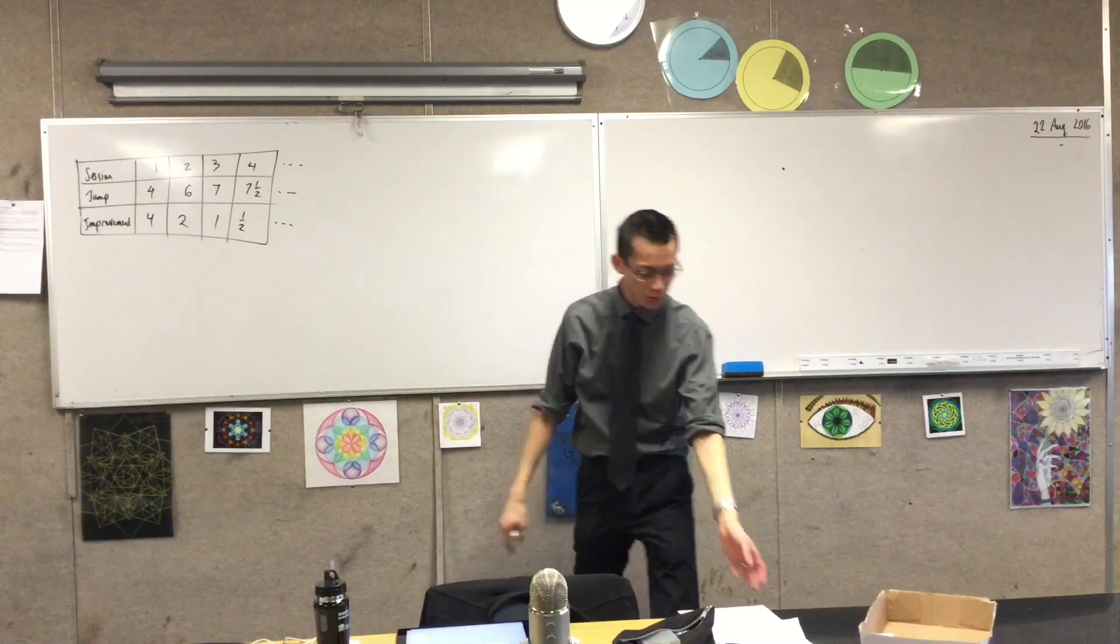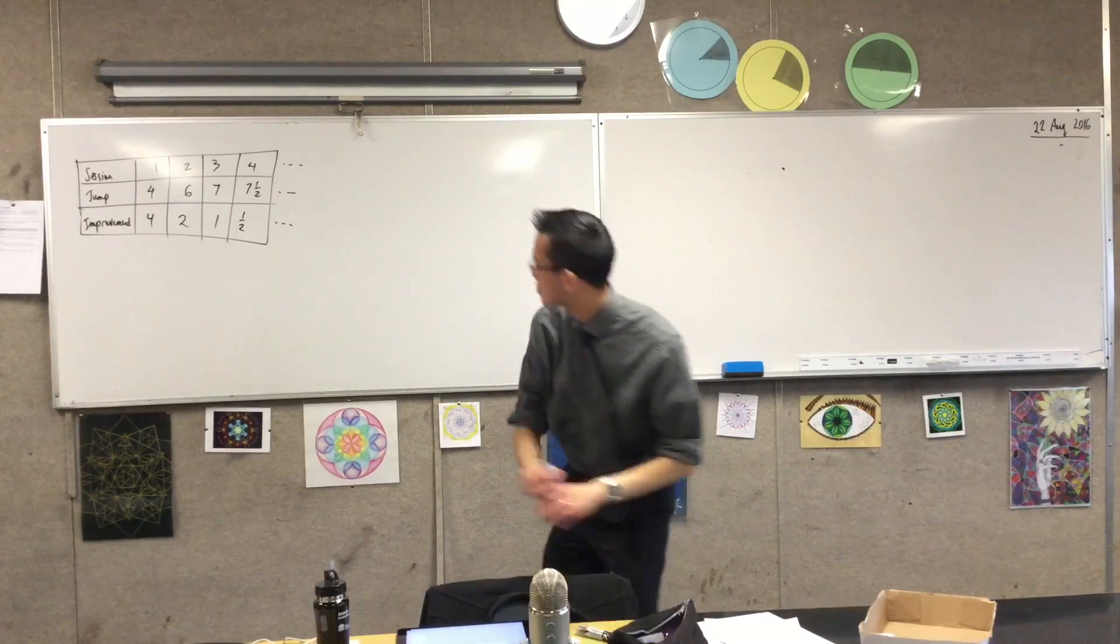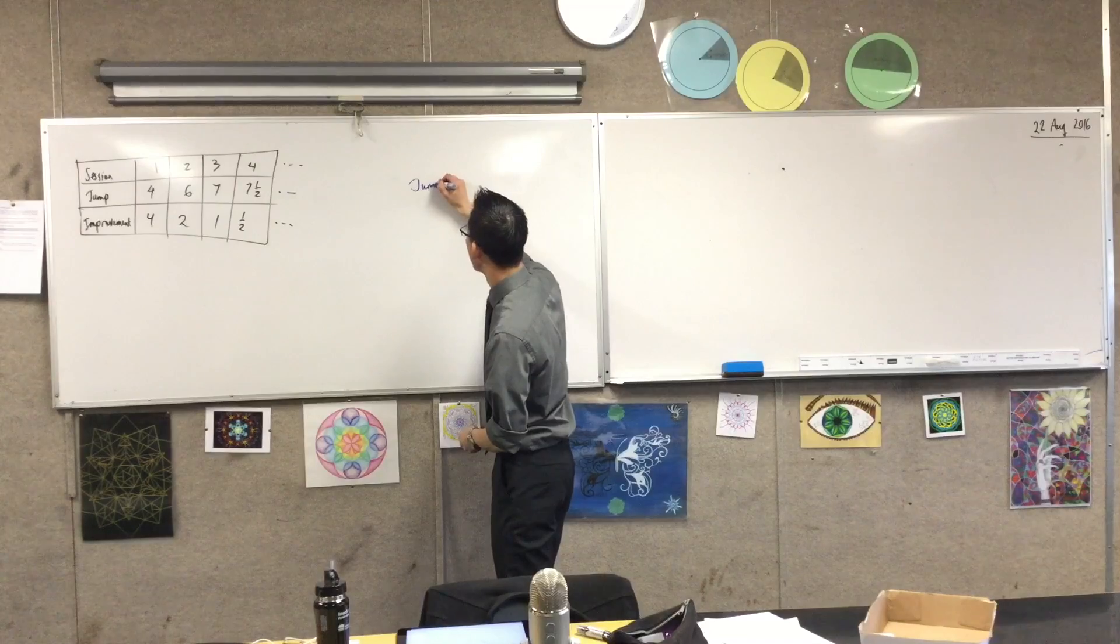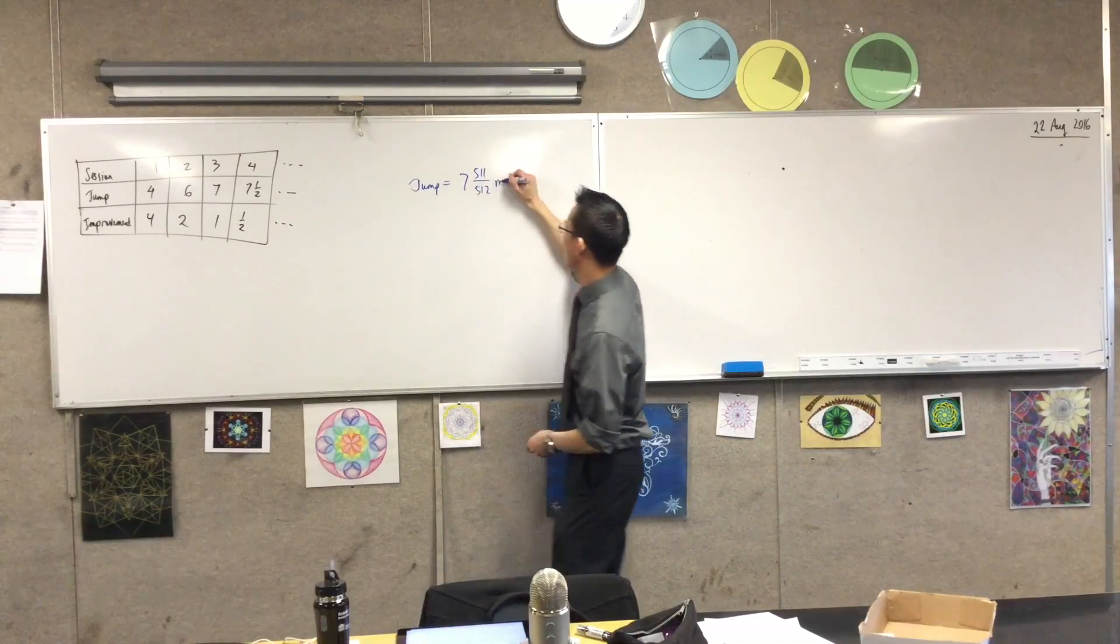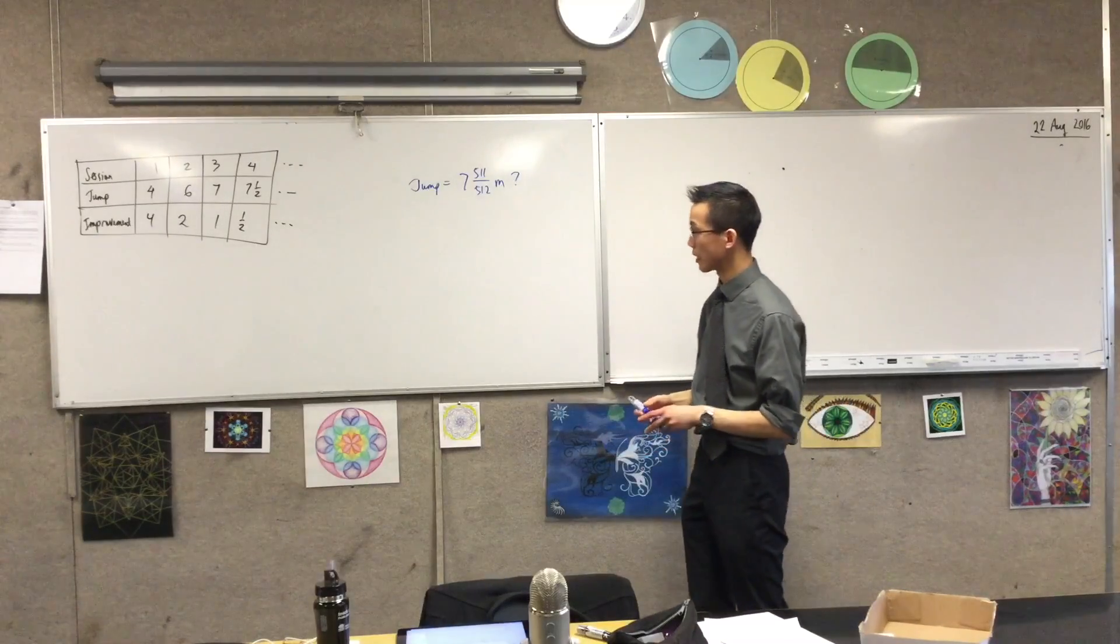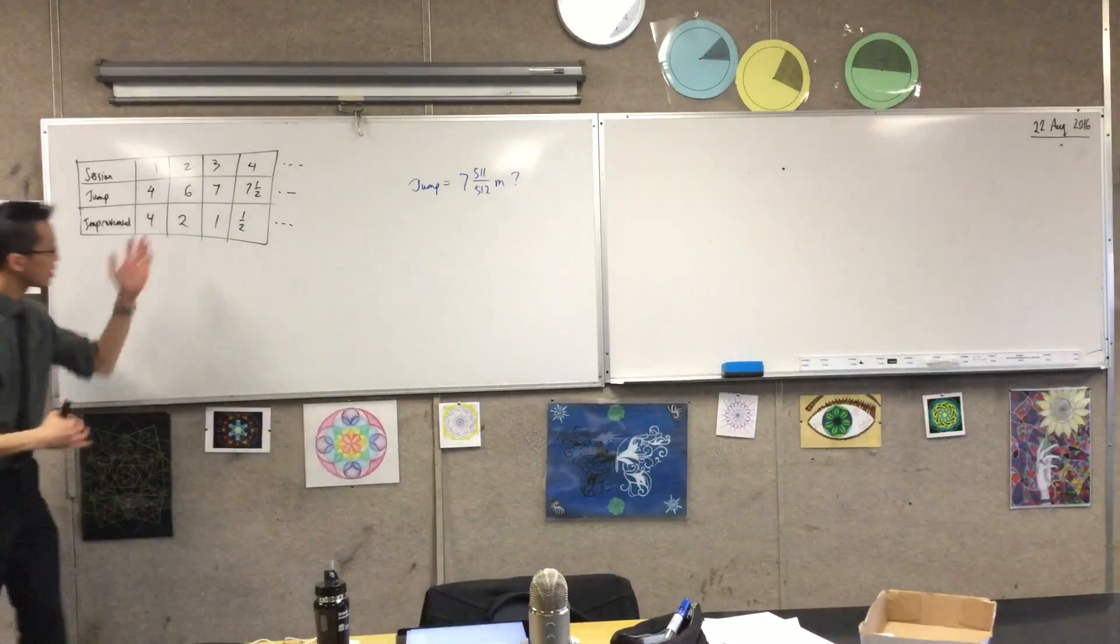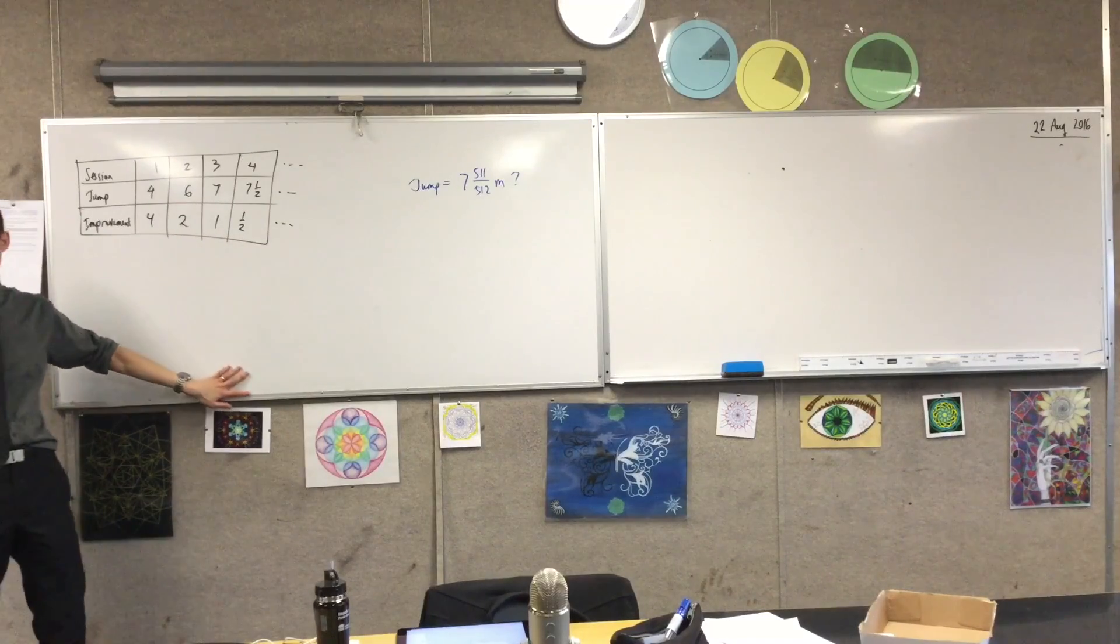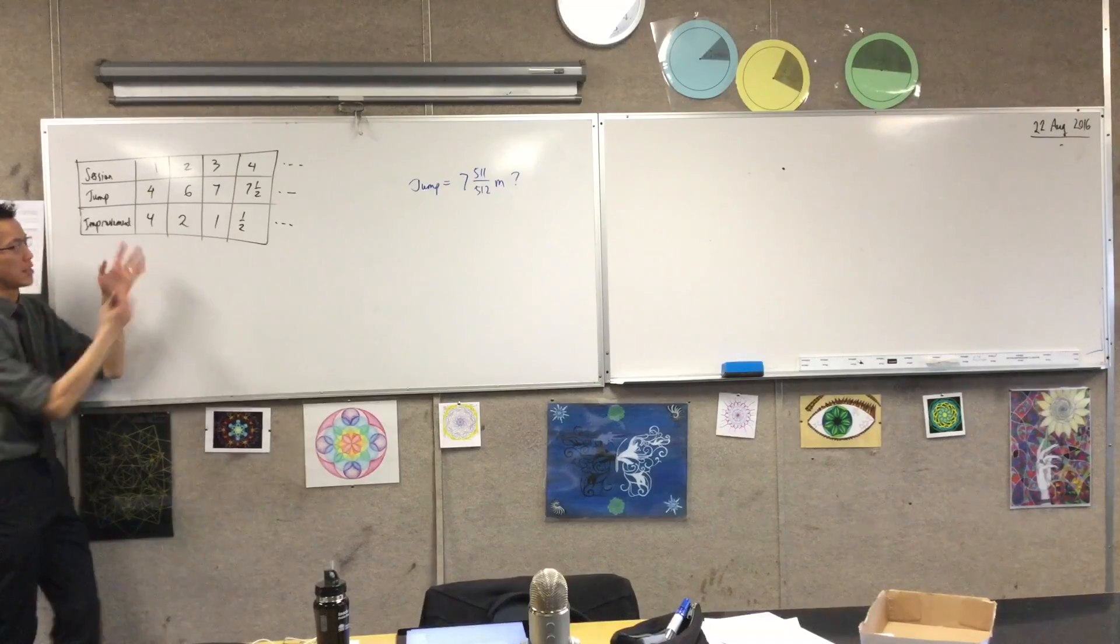And part 2 says in which session would his jump be, and then they give you this number. I think it's 5.11 or 5.12. And that's the question. Now, what's tricky about this is that you need to look at this data and think, what does it mean and how can I use all of the mathematical language and ideas to interpret this?